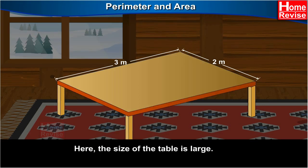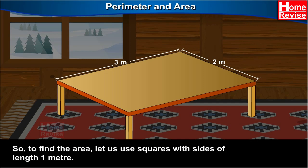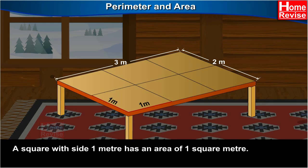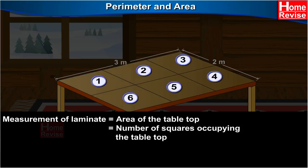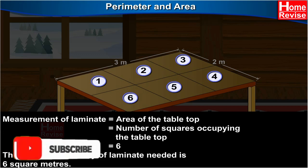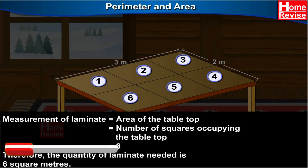Here, the size of the table is large, so to find the area, let us use squares with sides of length 1 meter. A square with side 1 meter has an area of 1 square meter. Let us find the measurement of laminate. Measurement of laminate is equal to area of the table top. The number of squares occupying the table top is 6. Therefore, the quantity of laminate needed is 6 square meters.